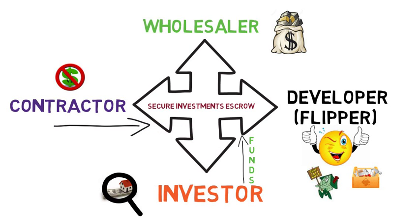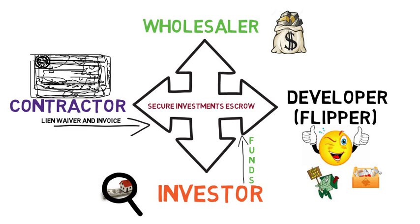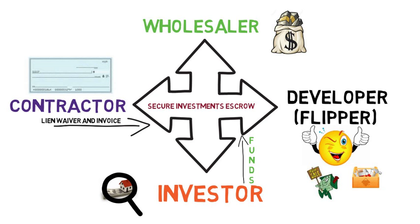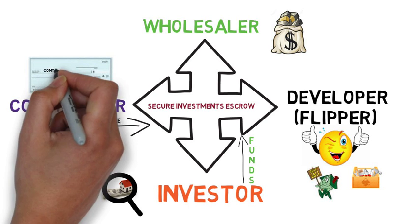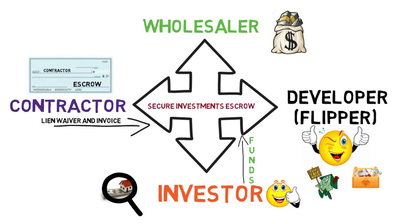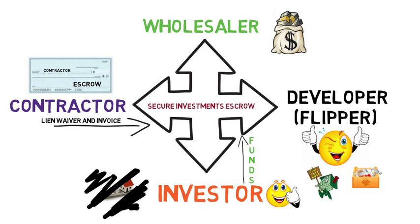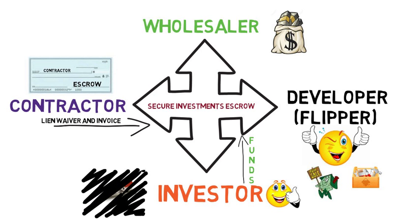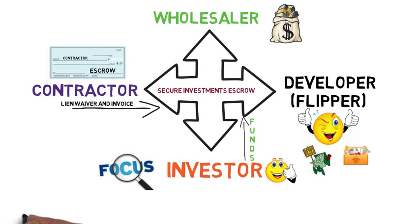The contractor sees that the funds are available for the project. He provides a lien waiver and an invoice to protect the project, and in turn, escrow releases funds directly to the contractor, keeping everyone else's hands clean. The investor sees that the funds are appropriated correctly to the specific project, giving him peace of mind so that he can focus on his other obligations that have provided him the opportunity to be a cash investor.